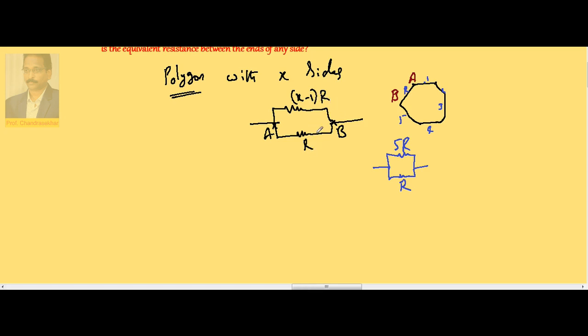So the equivalent resistance is given by R1 times R2 divided by R1 plus R2. Here, R1 times R2 is R times (X minus 1)R divided by the sum of these two, which is X times R. One R gets cancelled, so the equation becomes (X minus 1) by X times R.